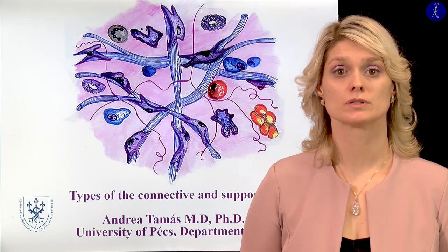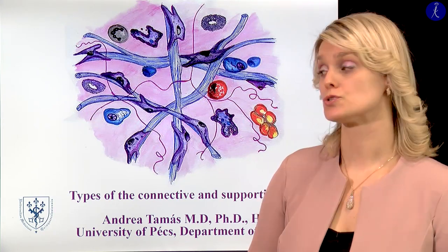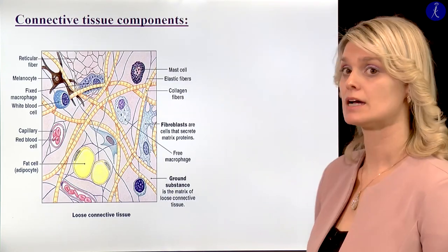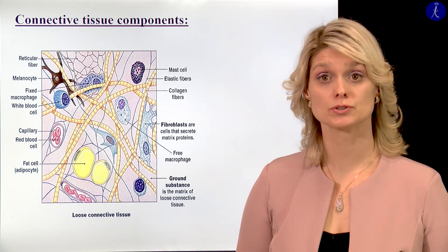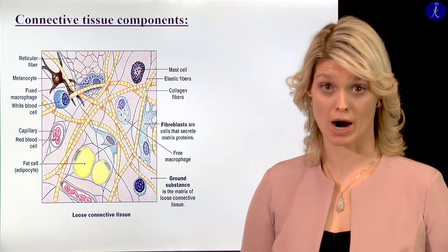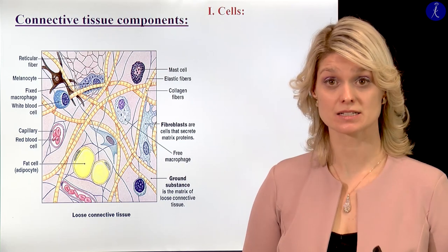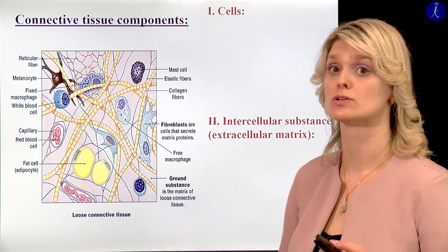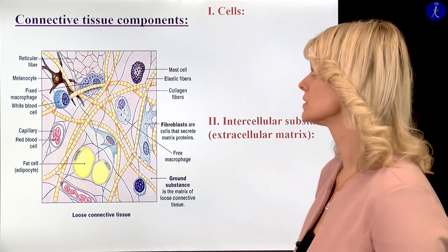Dear students, today I would like to continue my presentations about the connective tissue. Today I would like to show you the different types of the connective tissue. First, I would like to start with a little repetition because in the earlier lectures I told you the different parts of the connective tissue. We saw the main compartments, the different cells, and in the last lecture I showed you the intercellular substance, the extracellular matrix of the connective tissue.